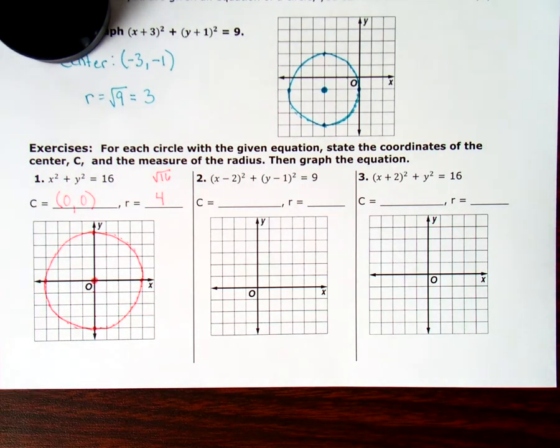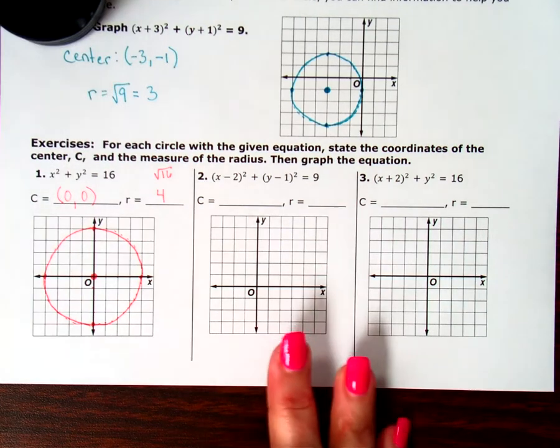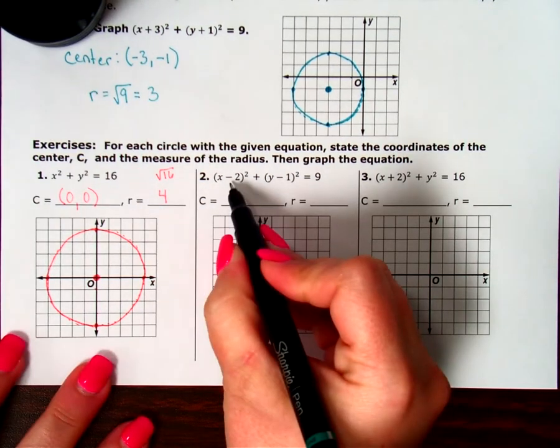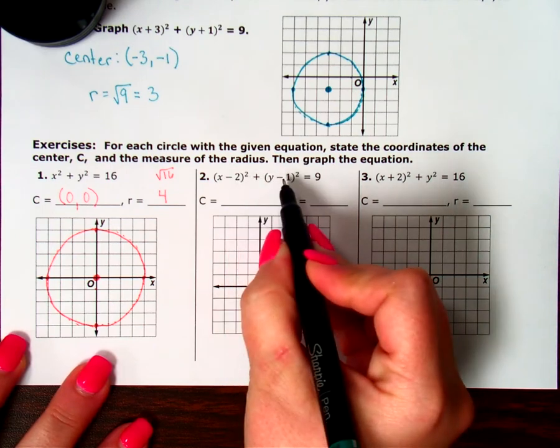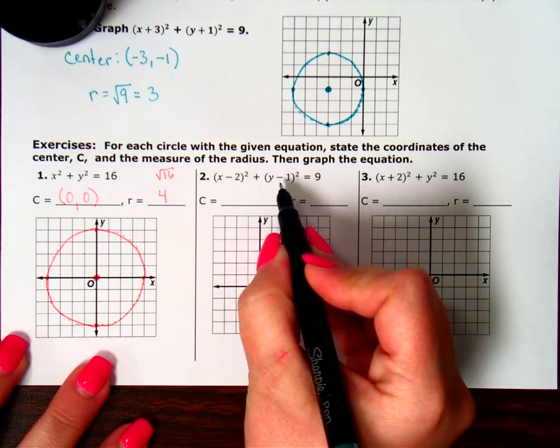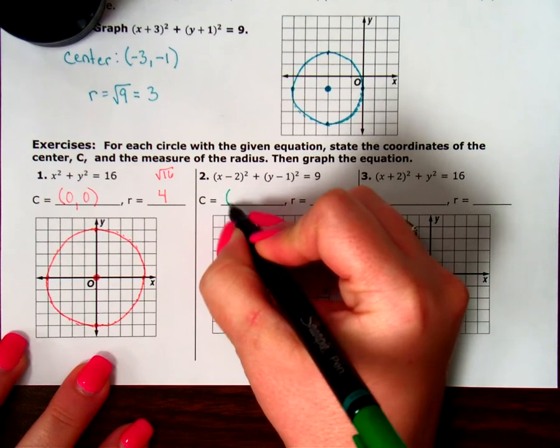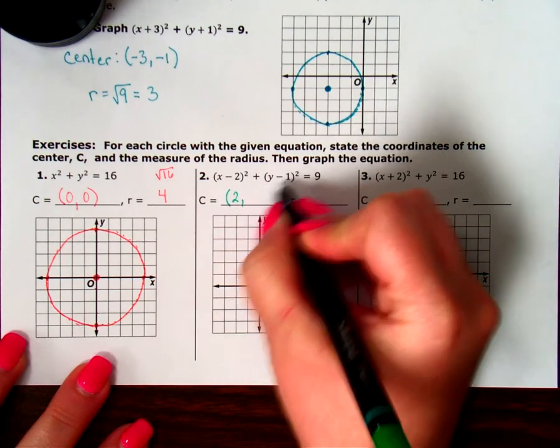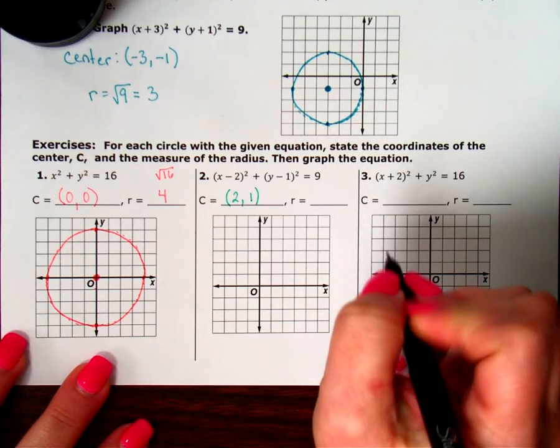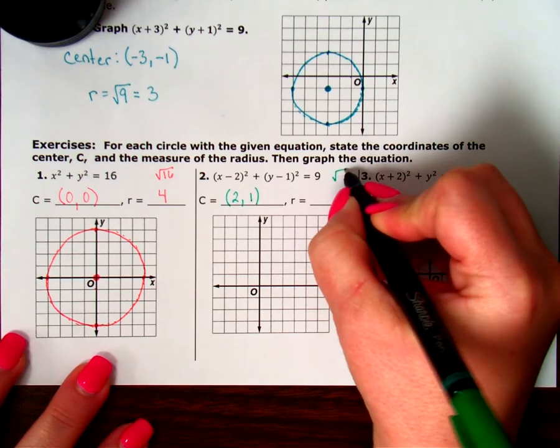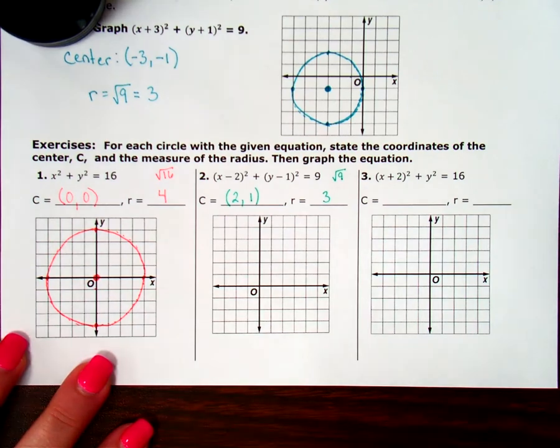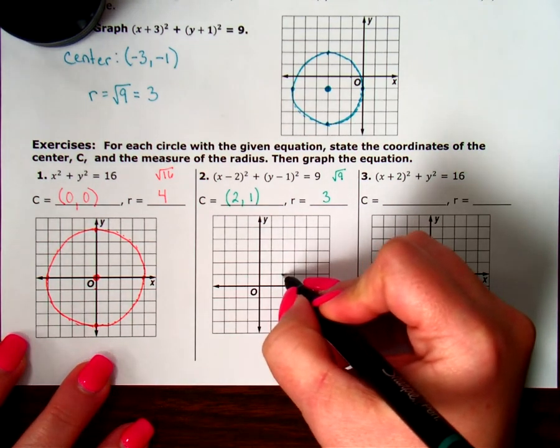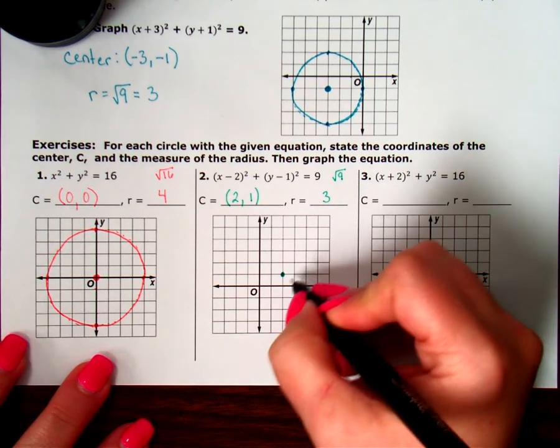And then the next one. I can see on this one I have a minus 2 and a minus 1. But remember, it changes the sign to the opposite of what they are when they go into the formula. So, that means this was really a positive 2. And that was really a positive 1. And then I'm going to square root that 9 to see my radius was 3. So, 2, 1. Here's my center. And then my radius is 3.